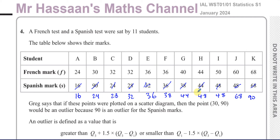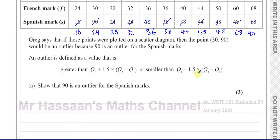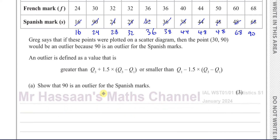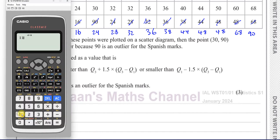We need to find the values of Q1 and Q3 to find the limits for the outliers. Q1 is the lower quartile, which is 25% — one quarter — along the entries. So we take the number of entries, which is 11, and divide by 4. 11 divided by 4 gives us 2.75.